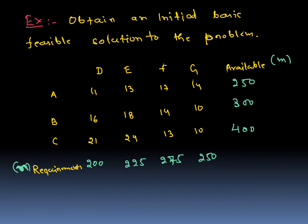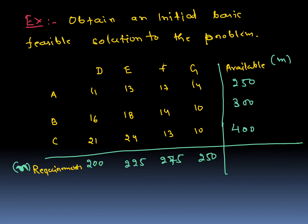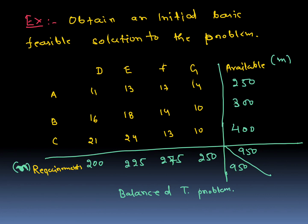Adding all supply values: 250 plus 300 plus 400 gives 950. The total demand is 200 plus 225 plus 275 plus 250, which also gives 950. Both are equal, so this is a balanced transportation problem. No need to create any dummy supply or demand point.